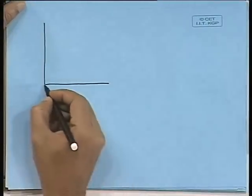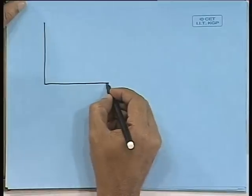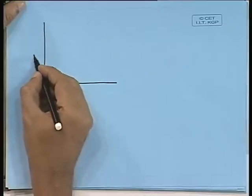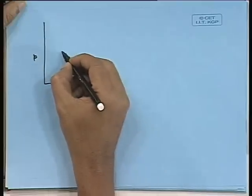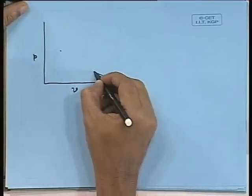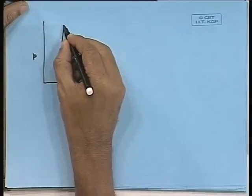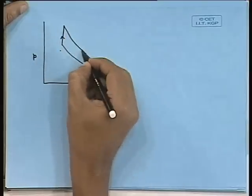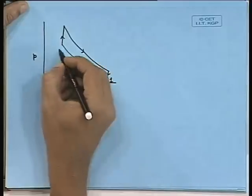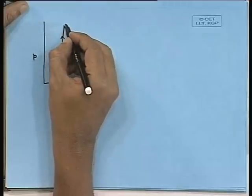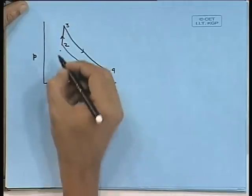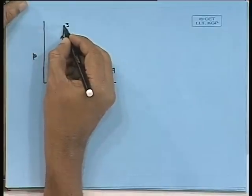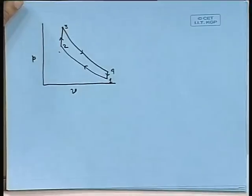We have the PV diagram, and this is the Otto cycle. So we will have 1, 2, 3, and 4. If this point is where the maximum temperature will occur in the Otto cycle, and if we want to keep it fixed for the other two cycles — diesel cycle and dual combustion cycle — then our diesel cycle will be 1, 2-dashed, 3, 4.